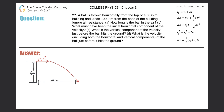Number 27. A ball is thrown horizontally from the top of a 60-meter building and lands 100 meters from the base of the building. Ignore air resistance. Letter A: How long is the ball in the air?